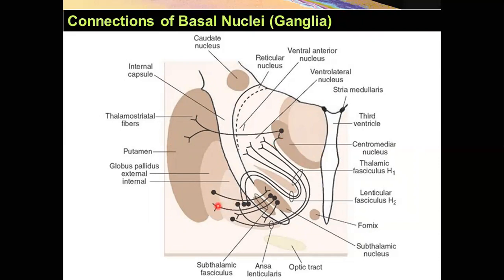Now, there is a connection between the subthalamic nucleus and the external globus pallidus. The external globus pallidus sends information to the subthalamic nucleus, and both globus pallidus — its external and internal parts — receive efferent information from the subthalamic nucleus. The afferent and efferent connections between globus pallidus and the subthalamic nucleus form the subthalamic fasciculus.